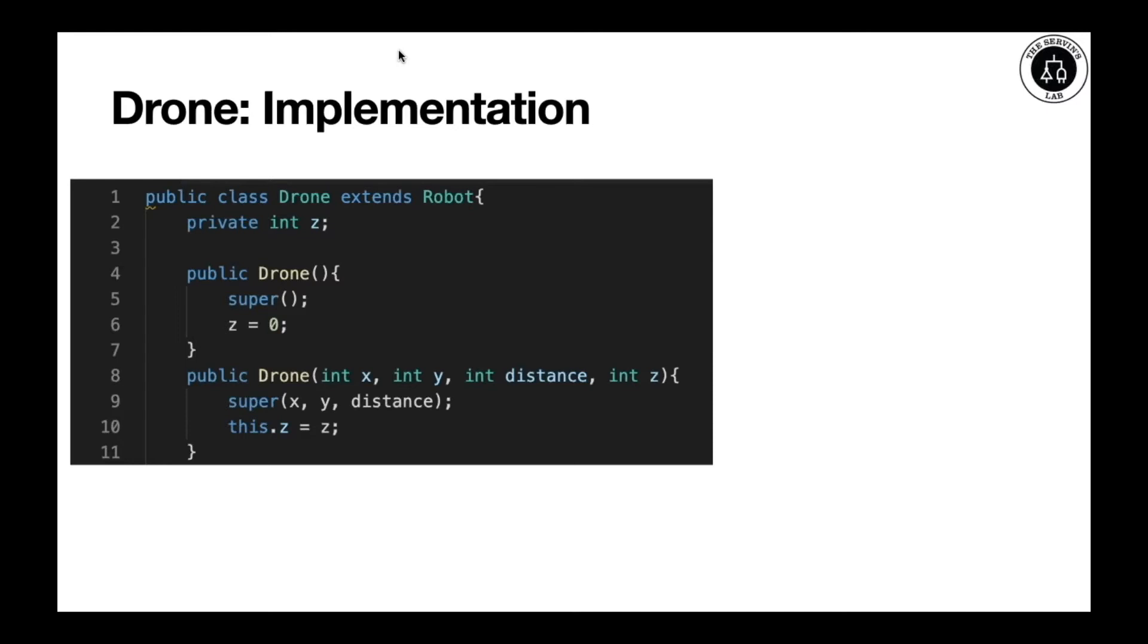When you define a class drone, the word extends must be right before the superclass that we're going to inherit. In this case, it will be robot. Extends will permit this contract that will allow us to basically say, I will inherit everything that comes from robot.